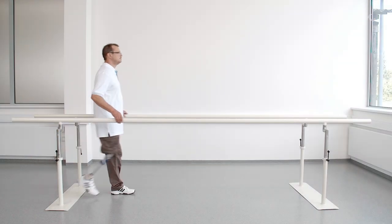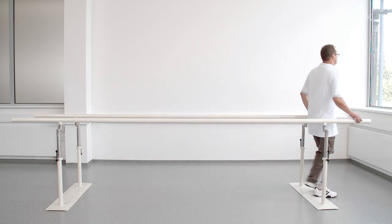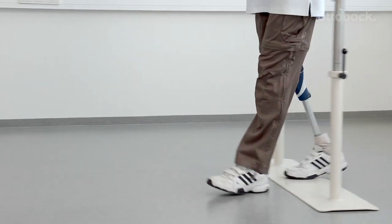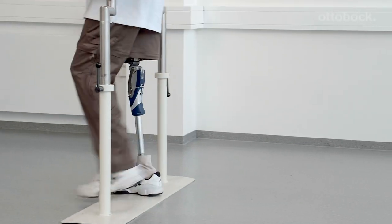To get a first impression of the knee joint's swing phase control, have the patient walk in the parallel bars with the factory settings. The following video sequence will demonstrate how the knee joint reacts to the extreme settings of the swing phase damping.